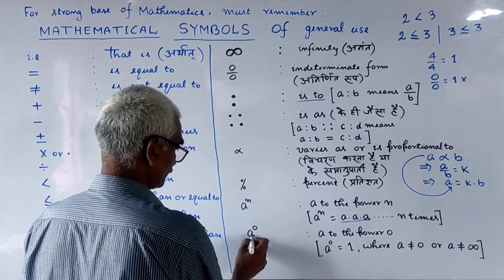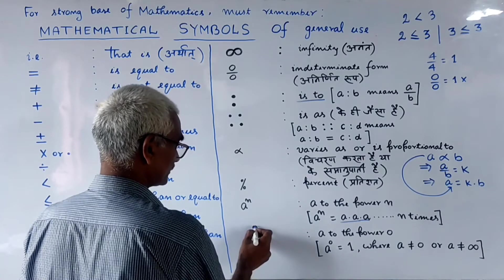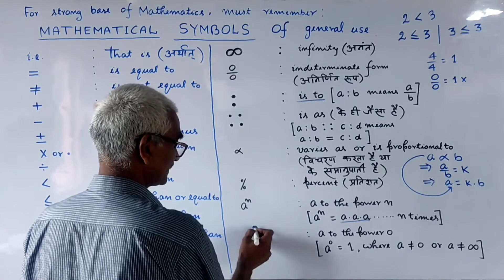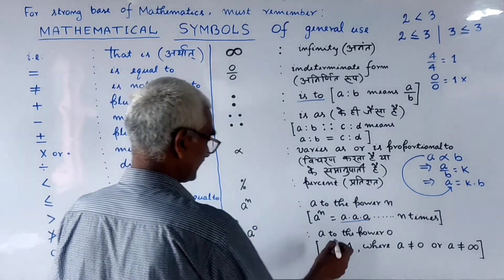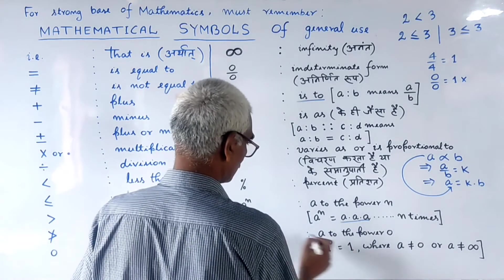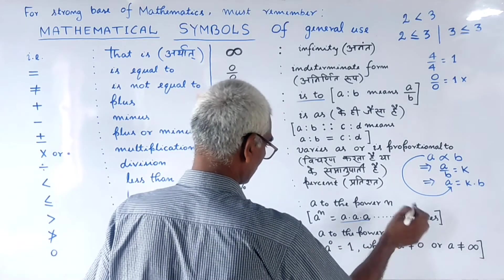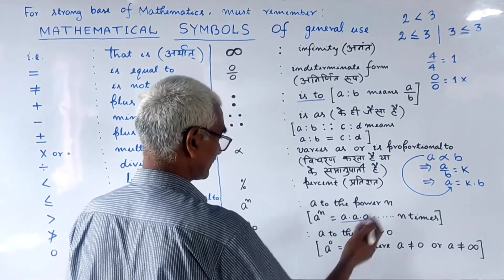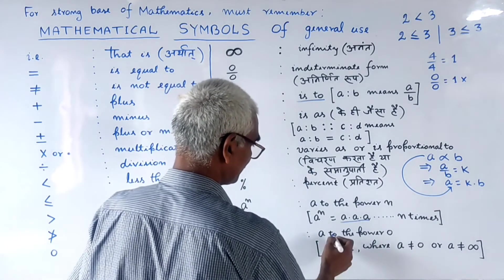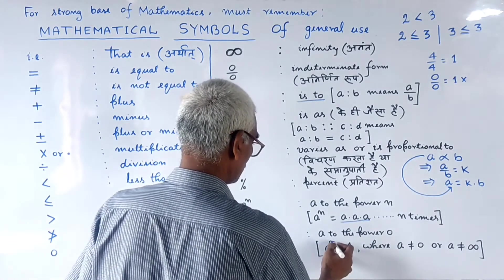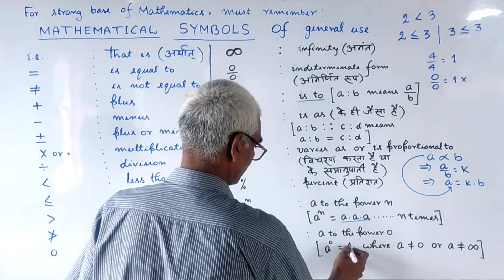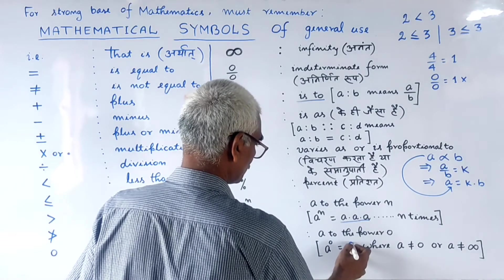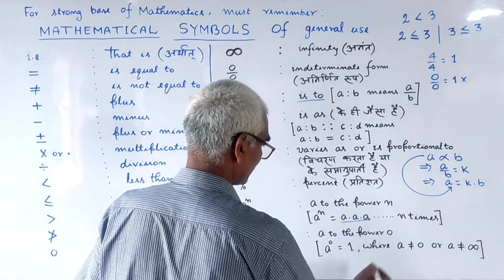If the power n is 0, then we call this symbol 'A to the power 0'. A to the power 0 is equal to 1.